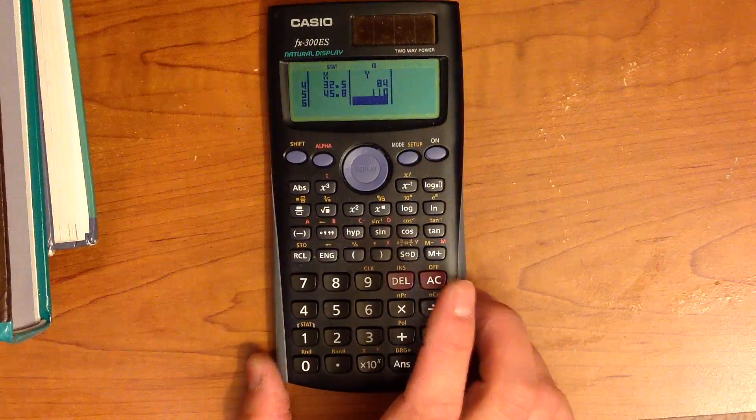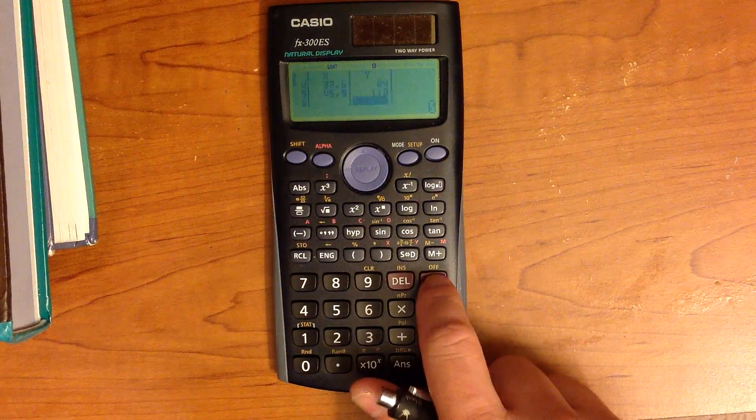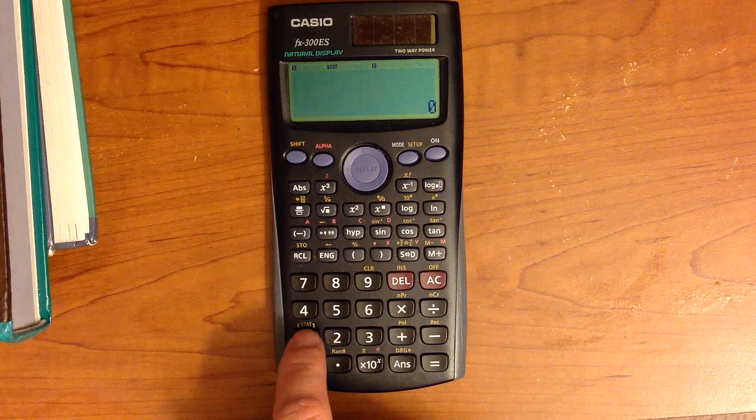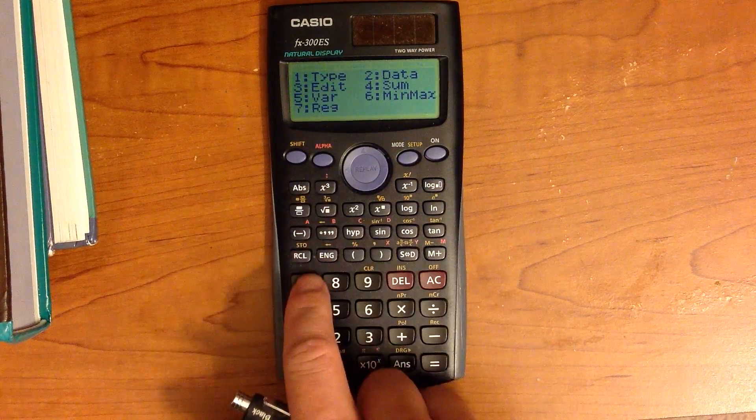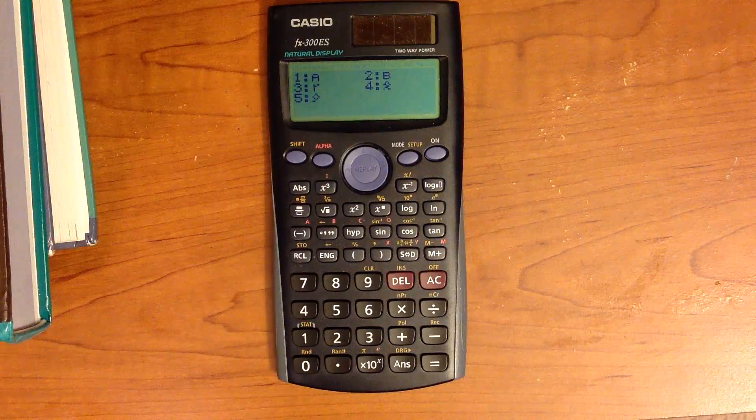Now that you have all these numbers in, what are you going to do? We're going to clear the screen and press Shift and Stat. Now we're going to go to Reg number 7, and you're presented with these options.